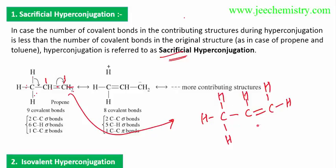This structure can be drawn in complete form. Counting the bonds: one, two, three, four, five, six, seven, eight — total eight covalent bonds. So in the contributing structure, the number of covalent bonds is less than in the original structure.